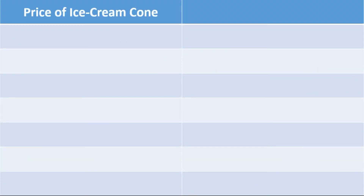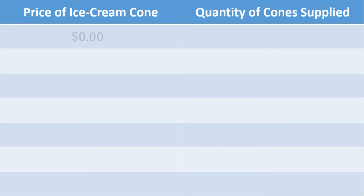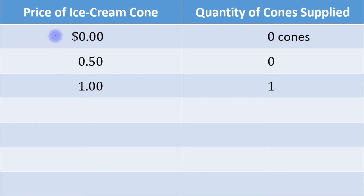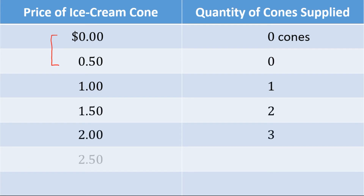On one side there is price of ice cream cone, and on the other side, quantity of cones supplied. When the price of ice cream cone was $0, quantity supplied is 0. When price is $0.50, quantity supplied remains 0. When price is $1, quantity supplied is 1. So at a price below $1, the seller does not produce any ice cream cone at all. As the price rises, quantity of cones supplied increases.